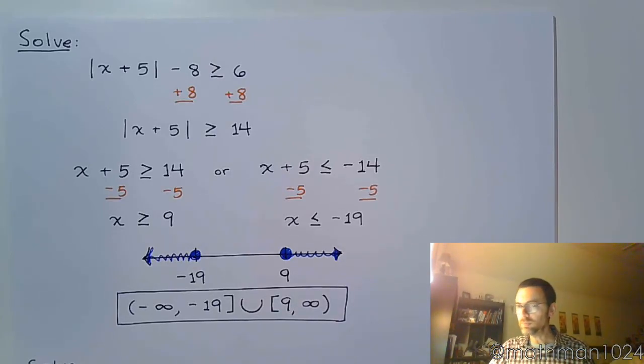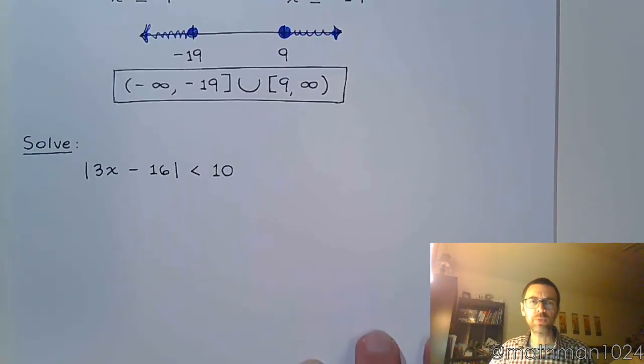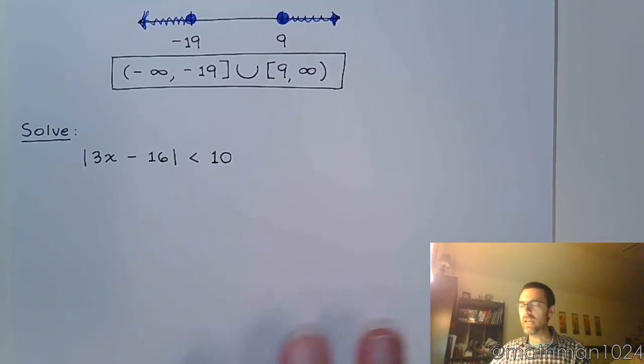Now let's look at this next one. This next one we have the absolute value already by itself and it's less than 10. Absolute value is distance, so I want your distance to be less than 10. That means I'm not trying to push you away, I'm trying to restrict your movement, restrict how far away you are.